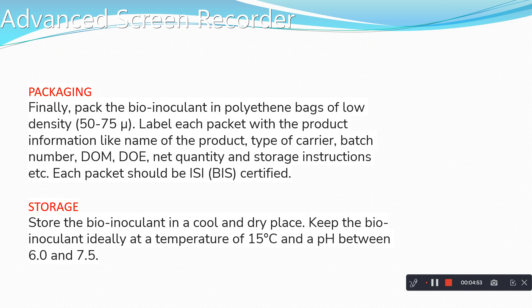Finally, packaging: package the bio-inoculants in a polyethylene bag of low density, 50 to 75 microns, and label each packet with product information like name of the product, type of carrier, batch number, units, date of expiry, net quantity, and storage instructions. Each packet should be ISI/BIS certified. Then storage: store the bio-inoculants in a cool and dry place, ideally at room temperature around 15 degrees Celsius.